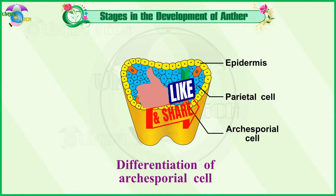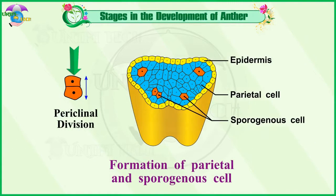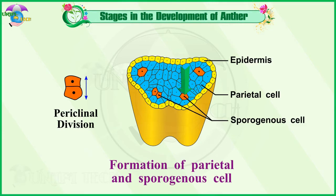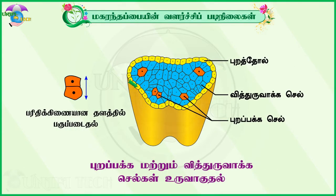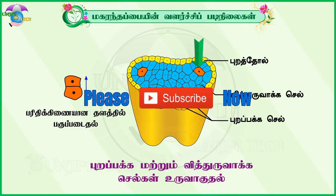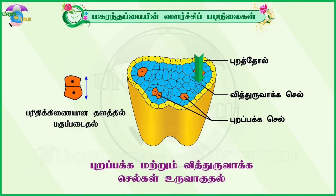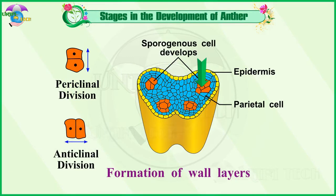The archesporial cells divide by periclinal divisions to form primary parietal cells towards the epidermis, and primary sporogenous cells towards the inner side of the anther. The primary parietal cells undergo a series of periclinal and anticlinal divisions to form two to five layers of anther walls.